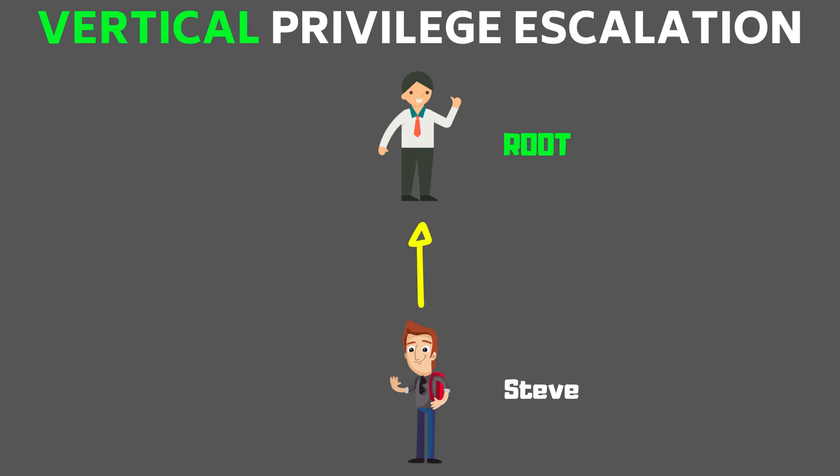In this case, if Steve is able to access root's data, that is called privilege escalation. He might use various ways to abuse the system — whether it may be a kernel exploit, a service running with SUID permissions, or a local privilege escalation exploit. He can abuse those and become a root user. Once a user is able to gain a high-privileged user's access, that is called vertical privilege escalation.